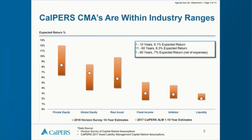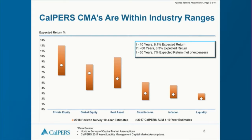This slide shows how our capital market assumptions compare to our peers. The orange bars show the range from the Horizon survey of 34 global peers — what they expect as future returns for each major asset class. The white dots in the middle show where we are. The key takeaway is that our capital market assumptions are within the range of the industry.